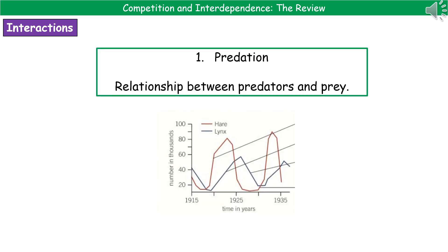The first ecological relationship we're going to look at is predation — the relationship between predators and prey. One of the most common questions they like to ask you is linked to the predator-prey graph you can see at the bottom there. They could ask you to describe the shape of the graph, in which case you say what you see: the red line, which is the hare, increases, and then a short while after we get an increase in the lynx population. Whereas when the hare population decreases, a short while after the lynx population decreases. That's all we need for a describe.